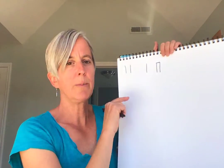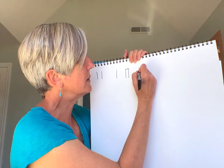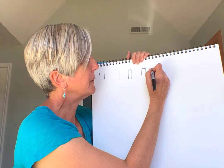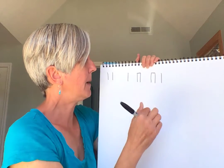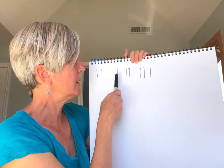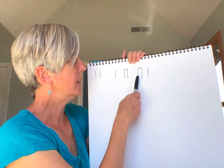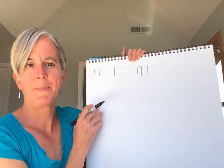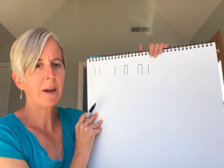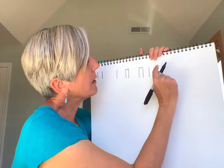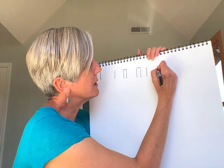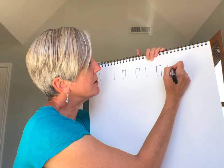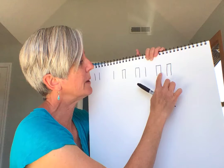Now we'll do Uncle Bob. Uncle was clap, clap — uncle — and then Bob. Uncle was faster, so we're connecting them. Next came Grandma Carol. That's going to be two connected here for Grandma, and two connected here for Carol. Grandma Carol.